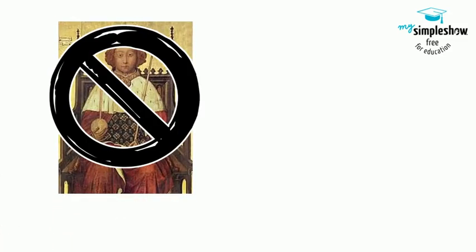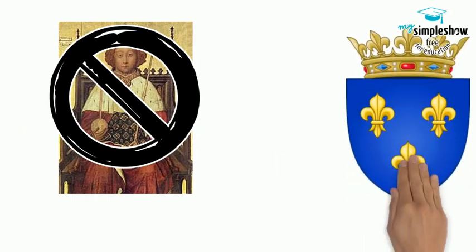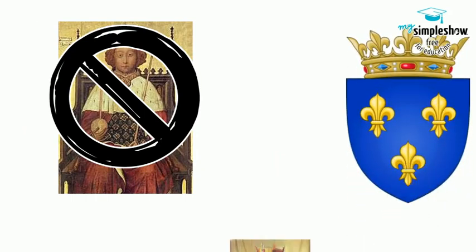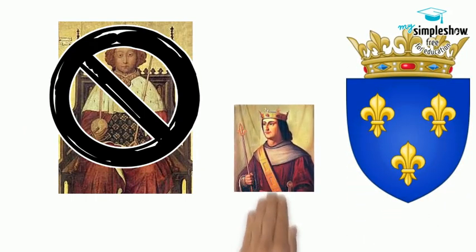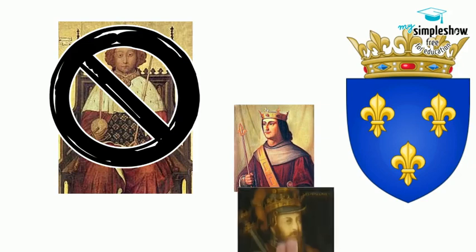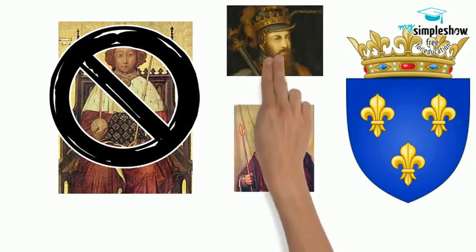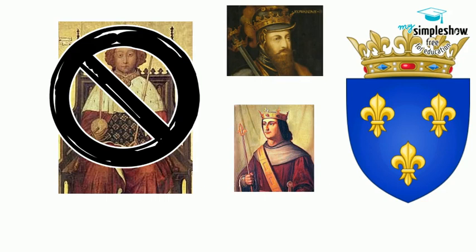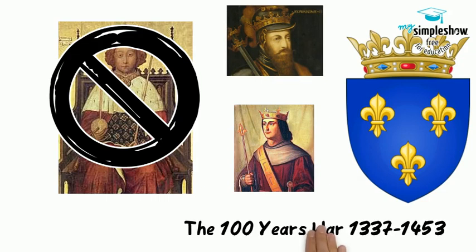The French refused to seat an English king, and instead settled on the king's cousin in the house of Valois, who would become Philippe VI. They would begin taking English lands away immediately. Edward III jumped back in the crown race, and the two countries would go to war from 1337 to 1453, in what was known as the Hundred Years' War.